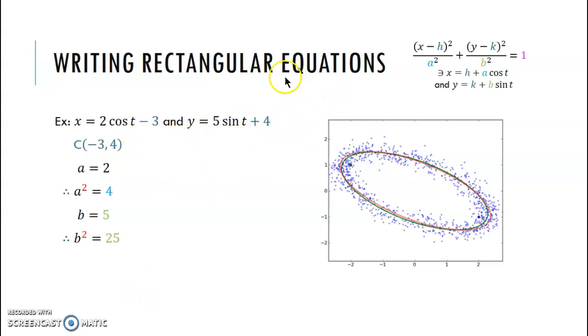So we are now talking about going from parametric equations to rectangular. So we're given our parametric equations. We're given x is equal to two cosine of t minus three and y is equal to five sine of t plus four.